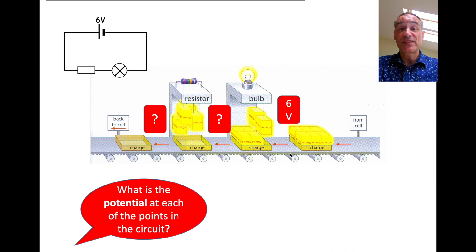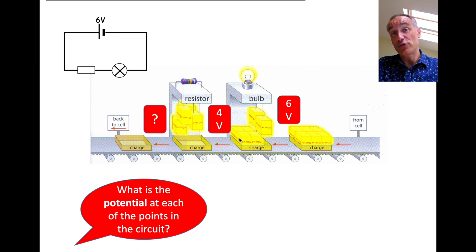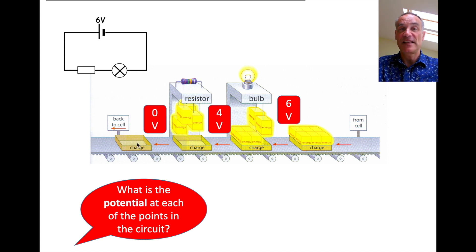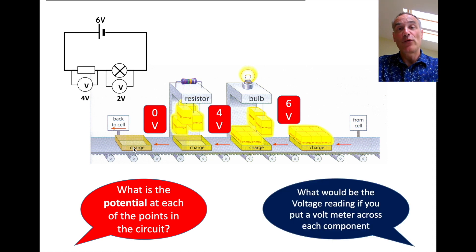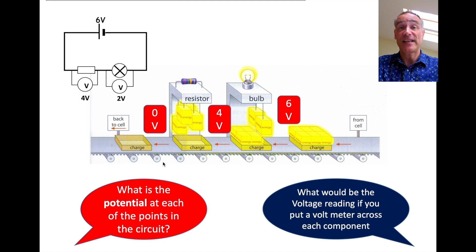We have six volts here - it's got six joules of energy. Notice the bulb only takes two joules of energy, so the charge still has four joules of electrical energy left. Then after it's gone through the resistor, it's lost all of the electrical energy, so you've got zero volts here. The potential difference across the bulb is only two volts because it only gains two joules, and across the resistor, four volts. Notice they both add up to six.